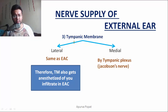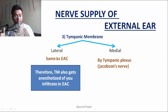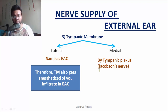The tympanic membrane has two surfaces: the lateral surface and the medial surface. The lateral surface has the same innervation as the external auditory canal — the anterior part through the auriculotemporal nerve and the posterior through the seventh and tenth nerves. Because of this shared innervation, you don't need to separately anesthetize the lateral surface of the tympanic membrane when you infiltrate the external auditory canal — it also gets anesthetized. The medial surface of the tympanic membrane is innervated by the tympanic plexus, which is formed by Jacobson's nerve, a branch of the ninth nerve.